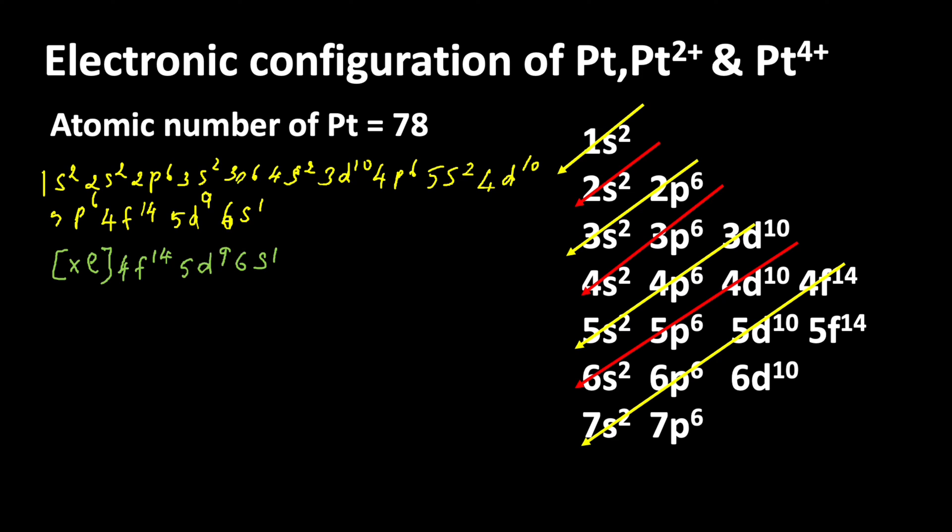Now let us see how to write the electronic configuration of Pt²⁺ ion. Pt²⁺ ions are formed when platinum, the neutral atom, loses 2 electrons. So the number of electrons available in Pt²⁺ is 78 minus 2, which equals 76.